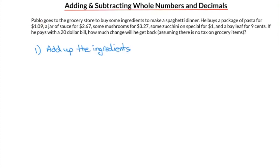We have $1.09 for the pasta package, $2.67 for the jar of sauce. The key here is that we're lining up the decimals so that they're in the same column. Next, we have the mushrooms for $3.27, again lining up the decimal.